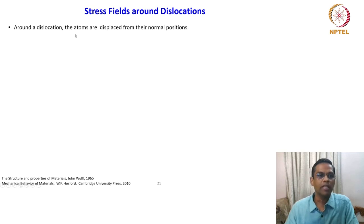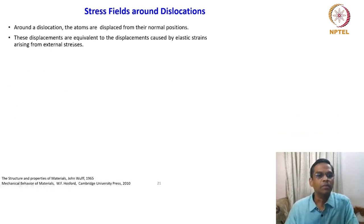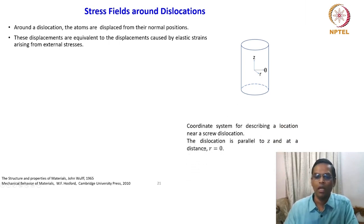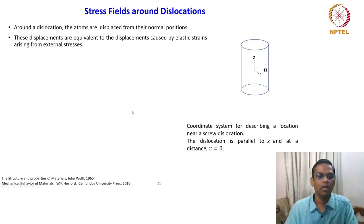Around the dislocation, the atoms are displaced from their normal position. These displacements are equivalent to the displacements caused by elastic strains arising from the external stresses. To describe these stress fields, we choose polar coordinates. This coordinate system is for describing a location near a screw dislocation — the dislocation is parallel to the Z axis and at a distance R equal to 0, so the R component is 0 there.